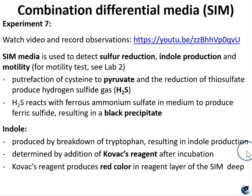You can observe the reduction of sulfur in the media if you see a black precipitate. The second thing SIM media can tell you is if the organism produces indole. Indole production is made possible by the presence of tryptophan contained in the casein and animal protein. Bacteria possessing the enzyme tryptophanase can hydrolyze tryptophan to pyruvate, ammonia, and indole. The hydrolysis of tryptophan can be detected by the addition of Kovac's reagent after a period of incubation. Kovac's reagent contains dimethylaminobenzaldehyde and hydrogen chloride dissolved in amyl alcohol. When a few drops of Kovac's are added to the top of the tube, the dimethylaminobenzaldehyde reacts with any indole present and produces a red reagent layer on the top of the media.